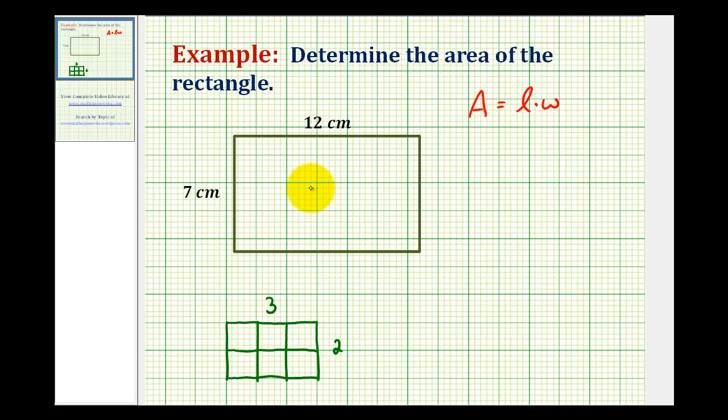So looking at our rectangle, to determine the area of this rectangle, we'll multiply the length of seven centimeters and the width of 12 centimeters. And I like leaving the units in, because when we multiply, this will remind us that the units will be square units. Seven times 12 is 84.